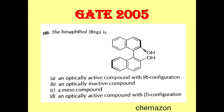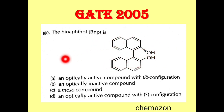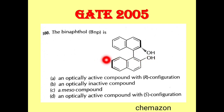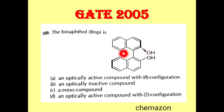Here is another question from GATE 2005: Binaphtol (BINAP) is — this is the binaphtol molecule discussed in the last video. The options are: an optically active compound with R configuration, an optically inactive compound, a meso compound, or an optically active compound with S configuration. Let us check whether the chirality conditions are satisfied.